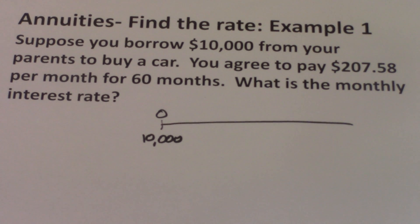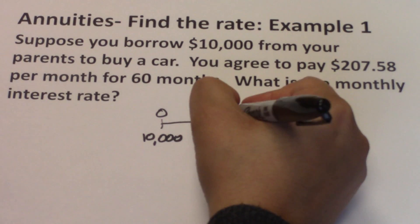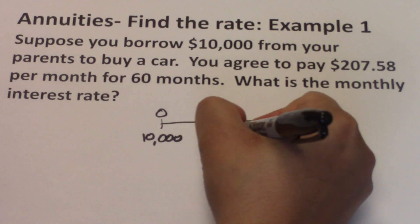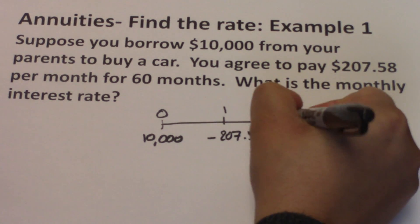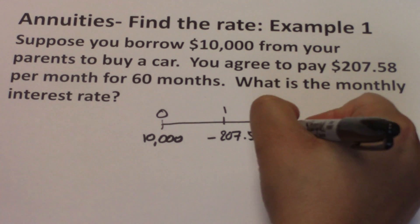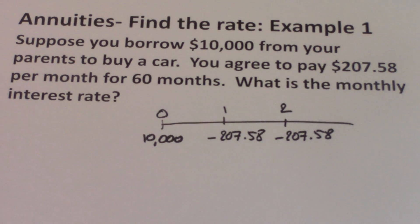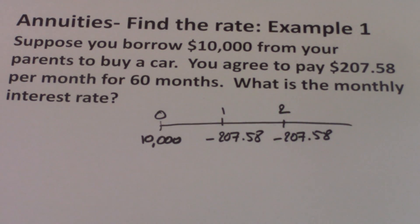So I'm going to input it into the timeline as a negative number. For the first month you're spending $207.58, second month you're paying $207.58, and so on. Since you're paying for 60 months, we want to know what the interest rate on this loan would be.